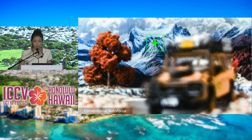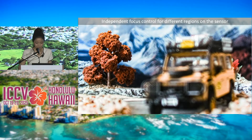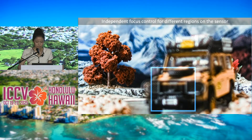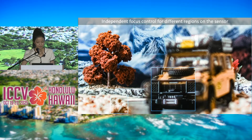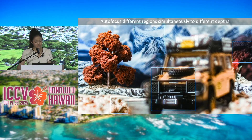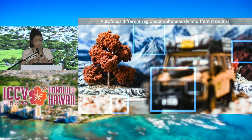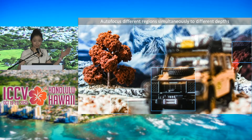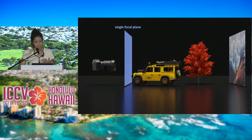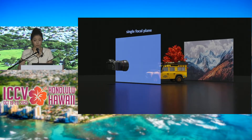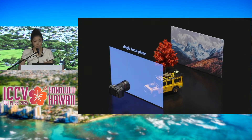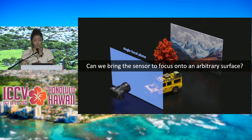Our work challenges this convention. Would it be possible to independently control the focus for different regions on the sensor? And even simultaneously, pushing beyond just simple squares, to the extent that we can be no longer confined to a single focal plane, but instead bring the entire sensor to focus onto an arbitrary surface.